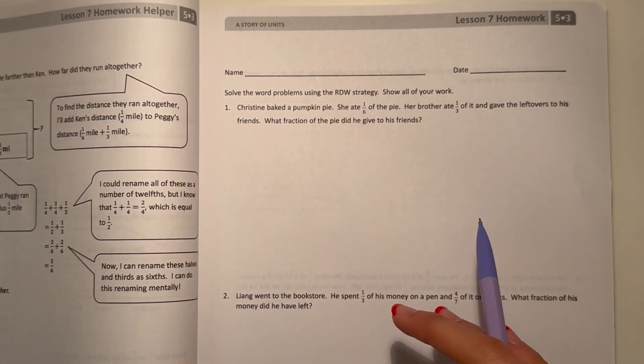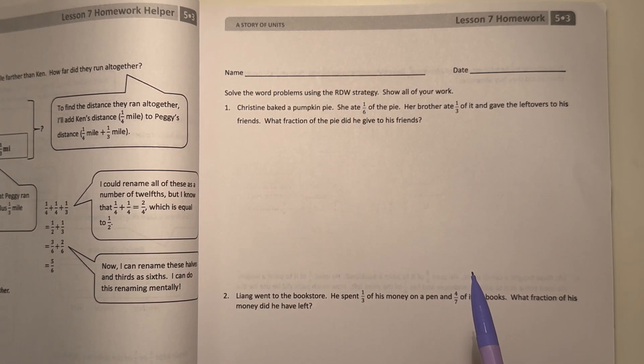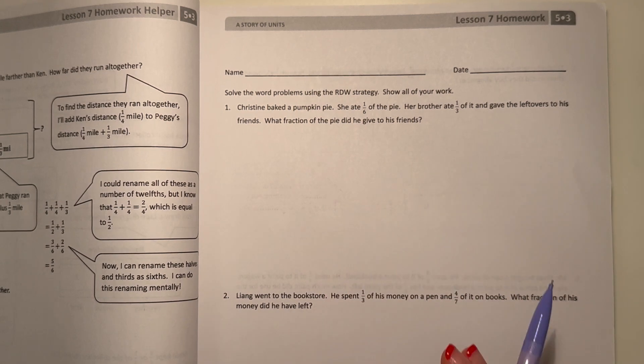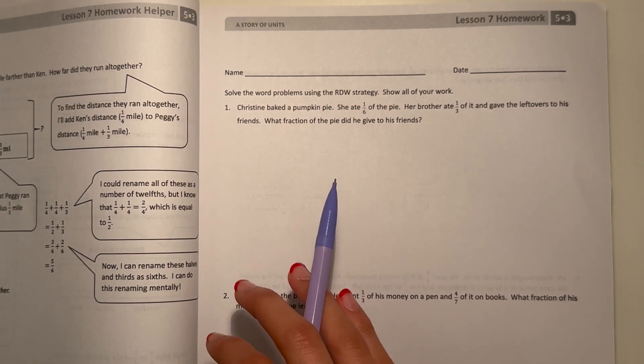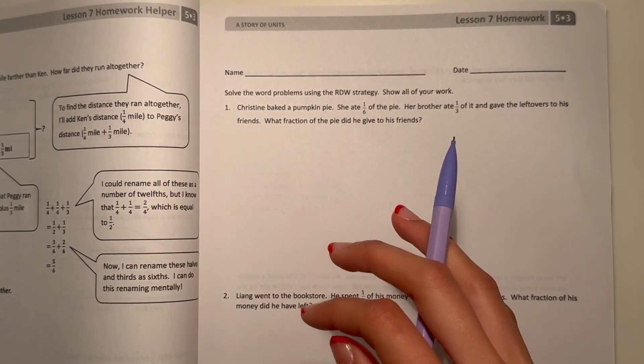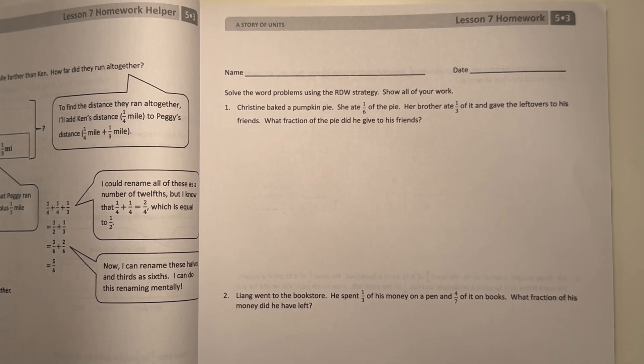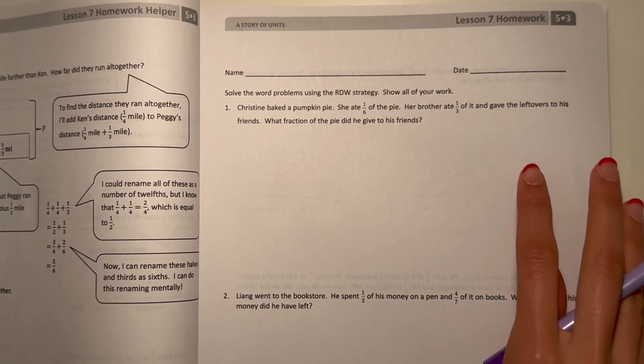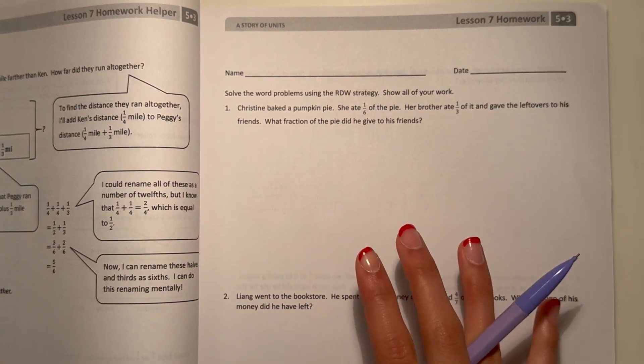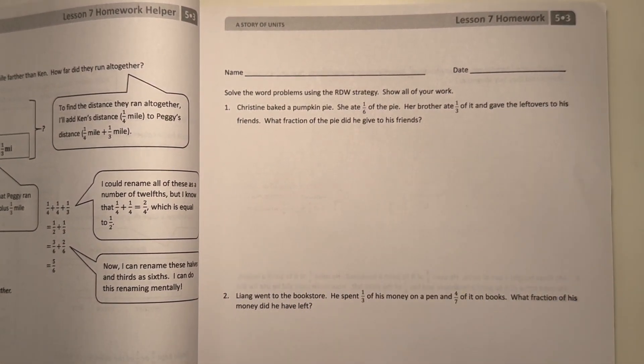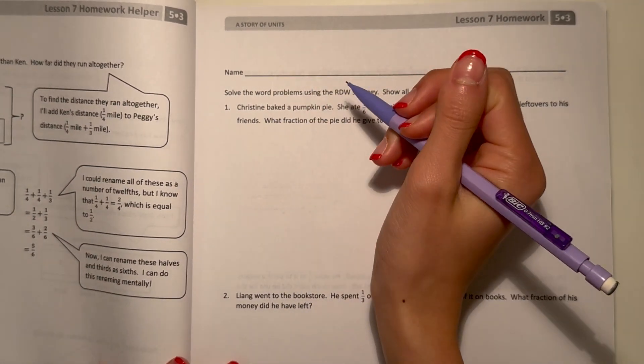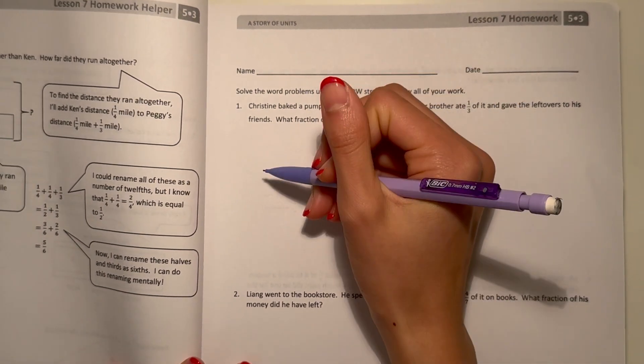Solve the word problems using the RDW strategy. Show all of your work. Alright, so number one, Christine baked a pumpkin pie. She ate one-sixth of the pie. Her brother ate one-third of it and gave the leftovers to his friends. What fraction of the pie did he give to his friends? Alright, so read, we read it, so now we draw.